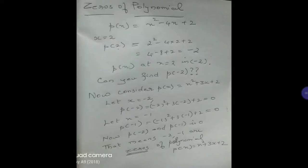Now let us see the next topic: zeros of polynomial — very important, listen very carefully. Consider p(x) = x² − 4x + 2. If x = 2, substitute 2 wherever x appears: p(2) = 2² − 4(2) + 2 = 4 − 8 + 2 = −2. So p(x) at x = 2 is −2. This is the concept: if a value is given, substitute it wherever x appears and find p(x).